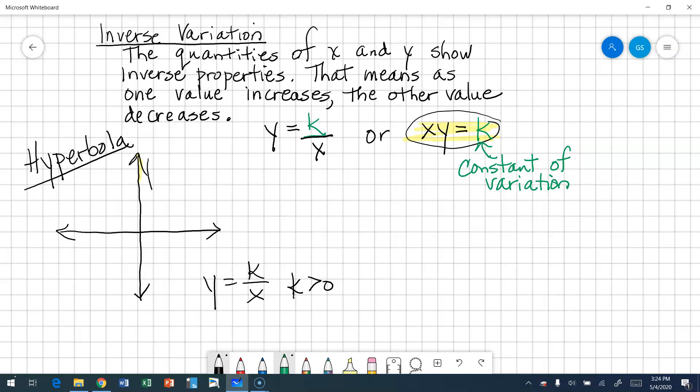If k is positive, then my x and y have to have the same sign. So my hyperbola arms are going to be in the first and third quadrant.